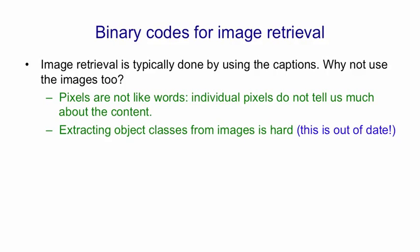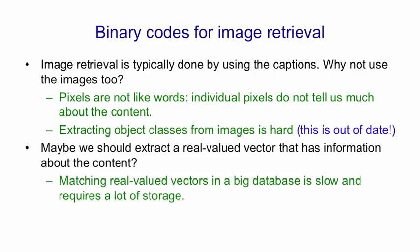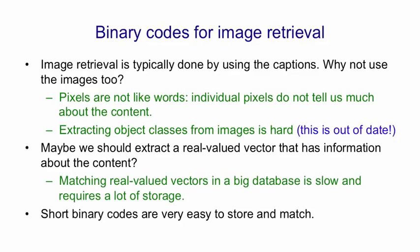Now deep neural nets have got much better at it, and so that may well be the way to go. So if we're not going to recognise the objects, maybe what we should do is extract a vector that has information about the content of the image. The obvious thing to extract is a real valued vector. But the problem is that matching real valued vectors in a big database is slow, and it also requires a lot of storage for the real valued vectors. If we can extract a fairly short binary vector that contains a lot of information about the image,